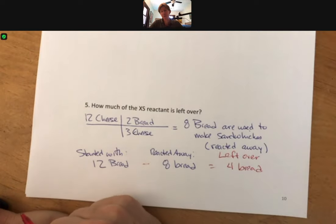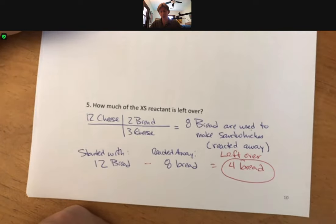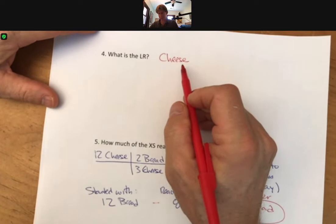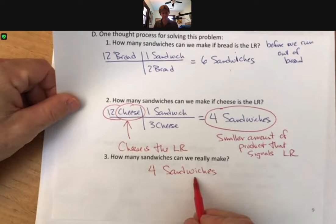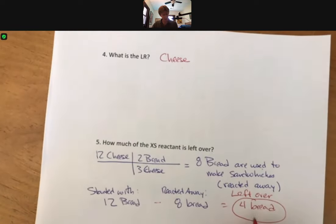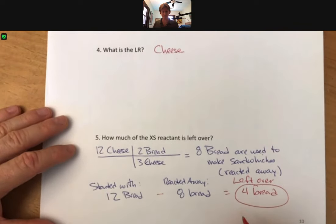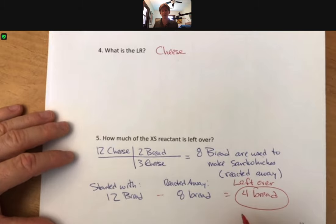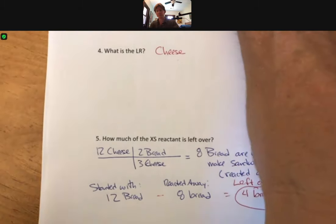We have now answered all the questions: we know what the limiting reactant is — cheese; we know how many sandwiches we can make — four sandwiches, the smaller amount; and we know how much of our excess reactant, bread, is left over. In the next video, we'll talk about how to do all of these things as far as chemistry goes.